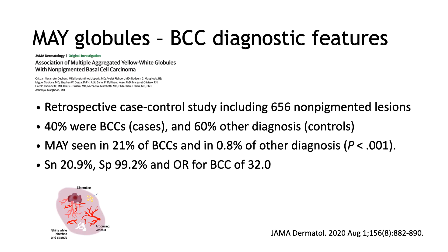So what are the diagnostic features of MAYG globules for the diagnosis of BCC? In this recently published retrospective case-control study including more than 600 non-pigmented lesions — in which 40 percent were BCCs and 60 percent were controls — MAYG globules were seen in 21 percent of BCCs and in only 0.8 percent of other diagnoses, and this was significant. The sensitivity for the diagnosis of BCC when MAYG globules were seen was only 20 percent, but the specificity was 99 percent.